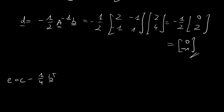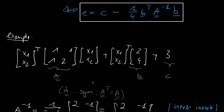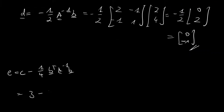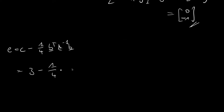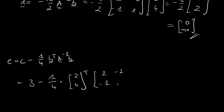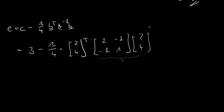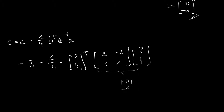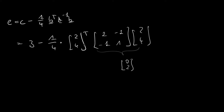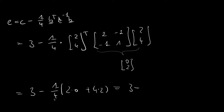Now for scalar e: e equals c minus one quarter b transposed A inverse b. With c equals 3, and A inverse b already computed as vector 0 2, we get 3 minus one quarter times the dot product of 2 4 with 0 2, which is 3 minus one quarter times 8, giving 3 minus 2, so e equals 1.